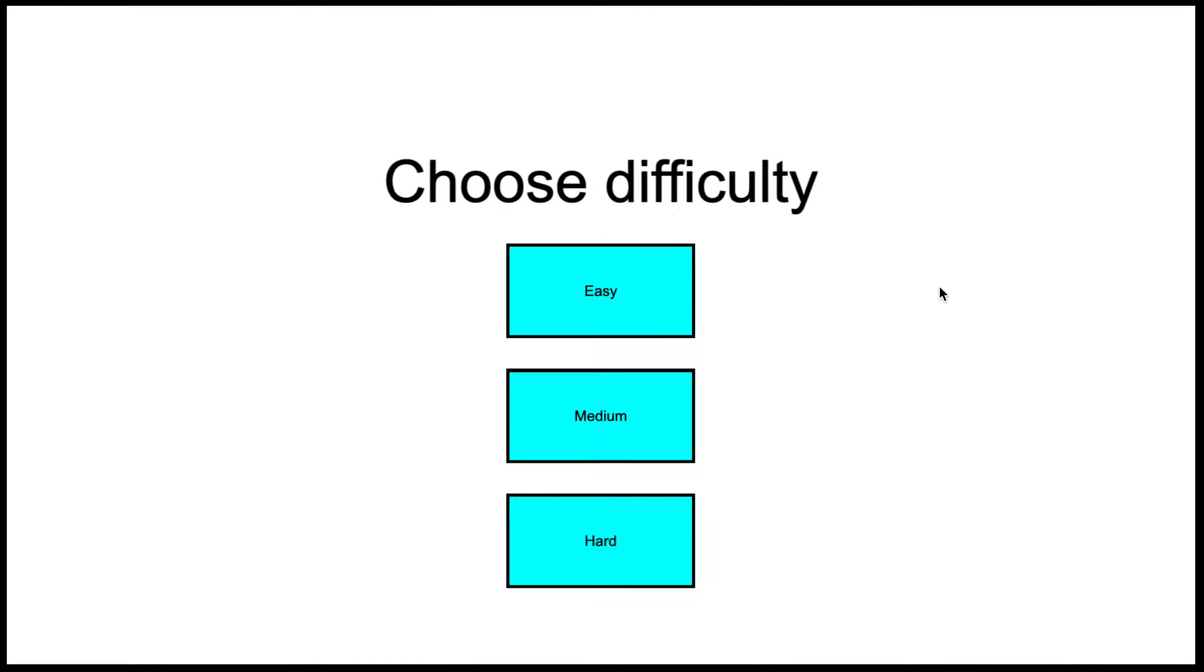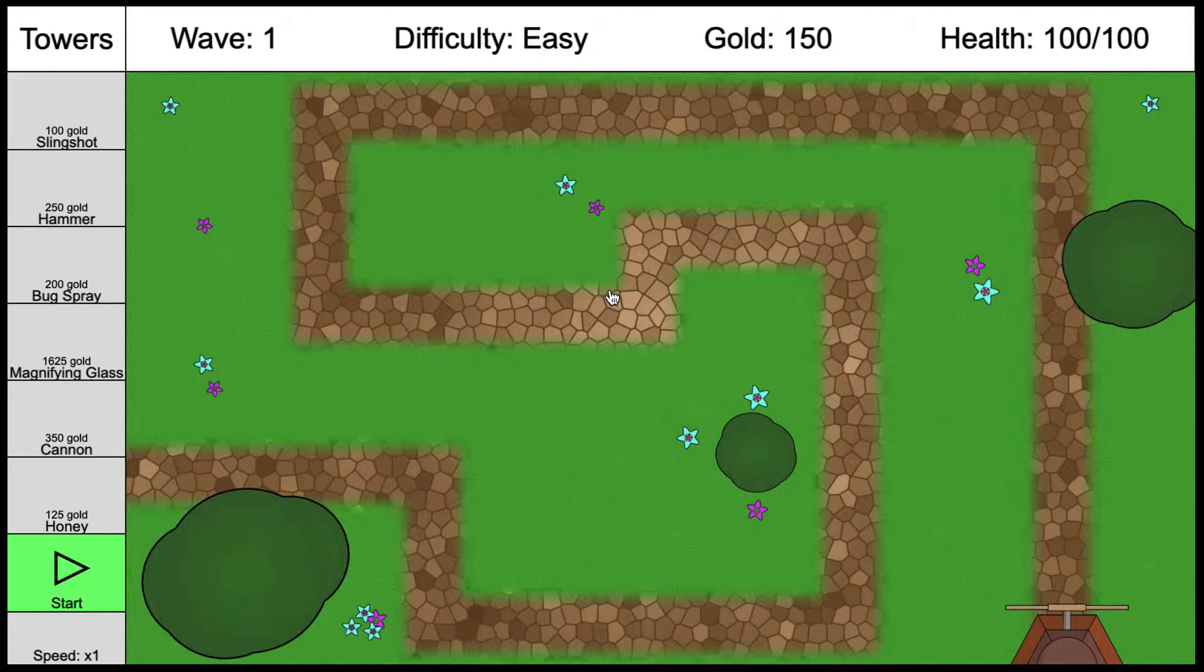Now you can choose a difficulty: easy, medium, or hard. Easy means that all the towers are at their base cost. Medium, there's a multiplier that gets applied, so they cost 25% more to build. And then in hard, it's 50% more. So it definitely increases the difficulty of the game overall, but we'll just stick with easy so you can see a simple demonstration. You click easy, and it brings up the game screen.